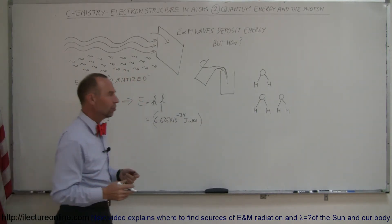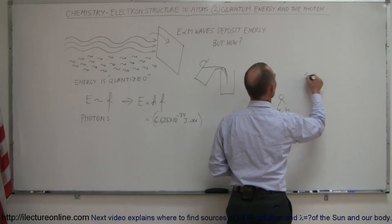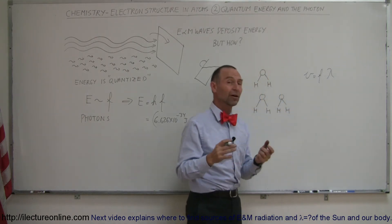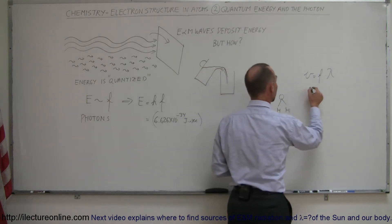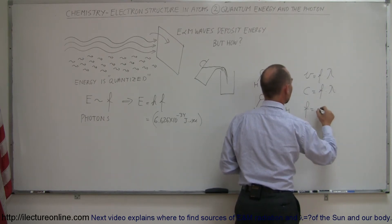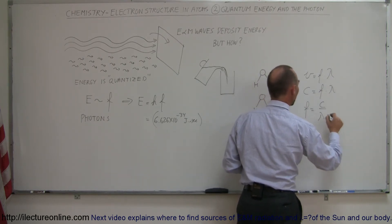Now since waves, radiation waves act like waves, we know that the velocity is equal to the frequency times the wavelength. And of course the speed of light or photons is equal to the speed of light, is equal to the frequency times the wavelength. So the frequency of a photon is equal to the speed of light divided by its wavelength.